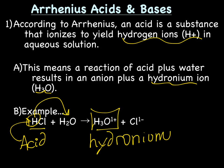And the poor little anion, the Cl, is left on his own. So that's Arrhenius's definition of an acid.